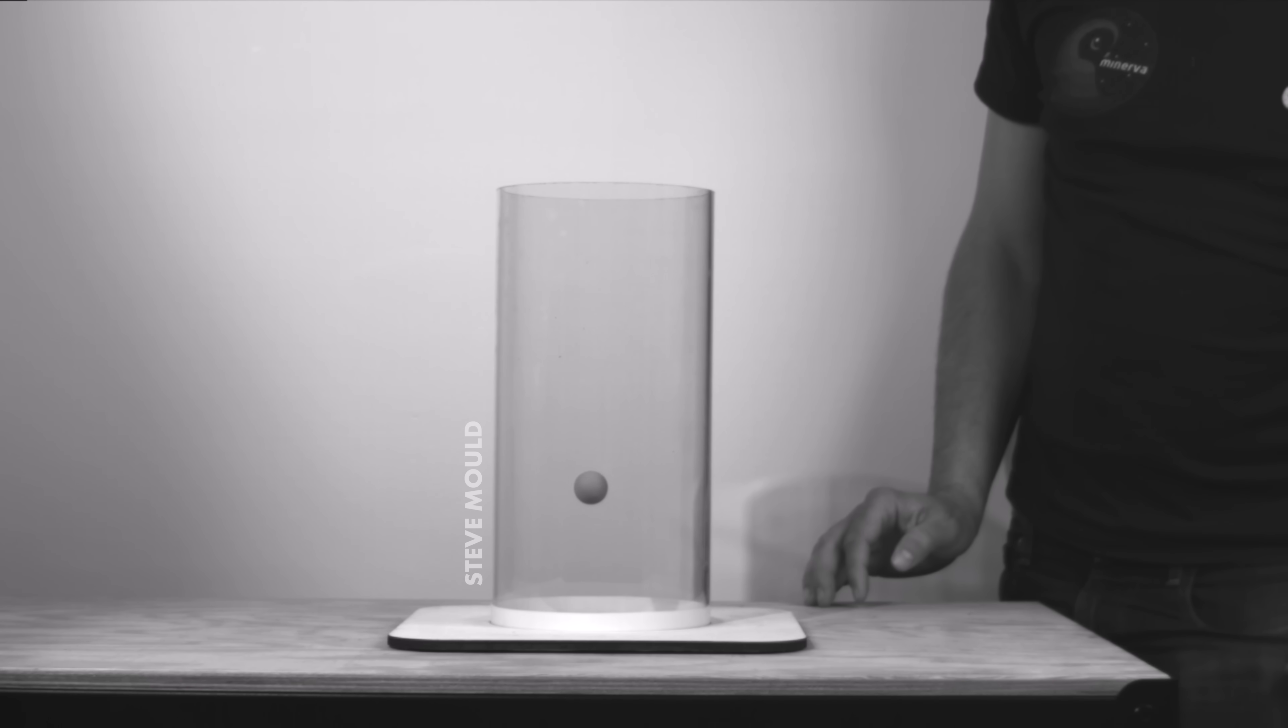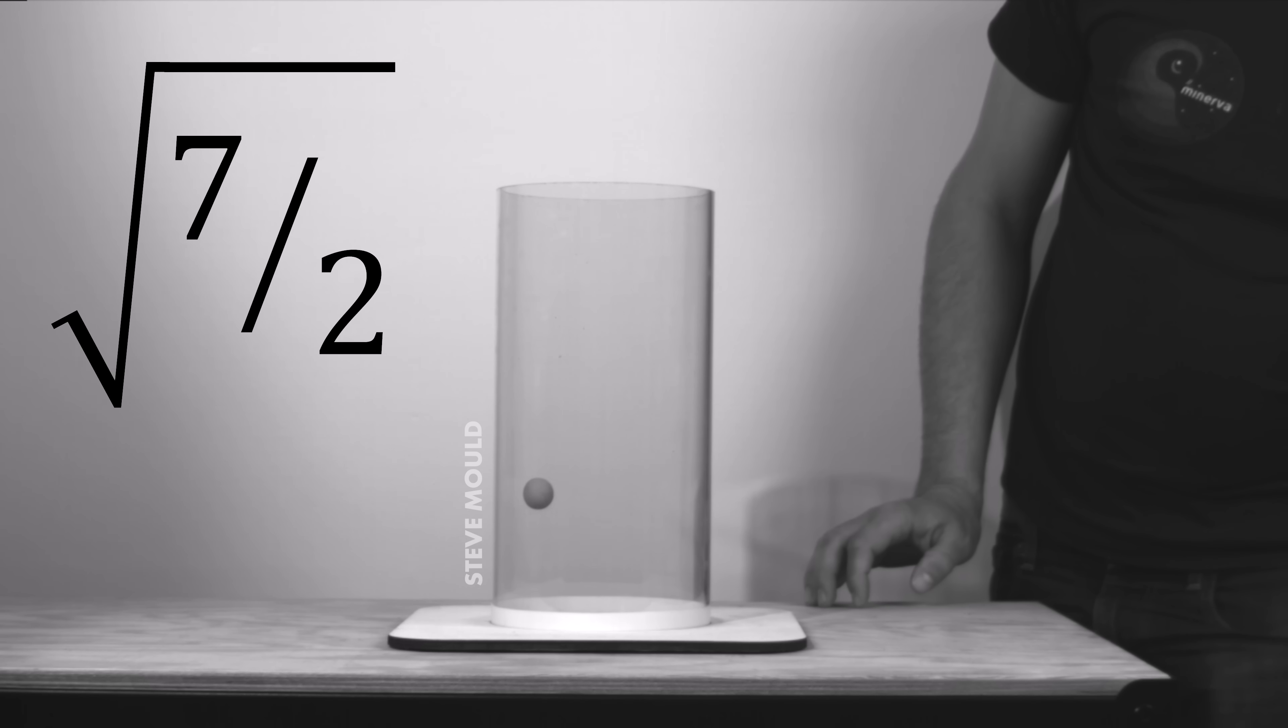That's not the interesting part though. The interesting part is what happens when you count the oscillations. Like how many times will the ball go around the cylinder for every one vertical oscillation? And you might think, well, that depends on the mass of the ball or the radius of the ball or the radius of the cylinder.